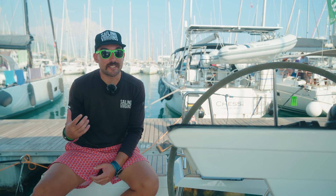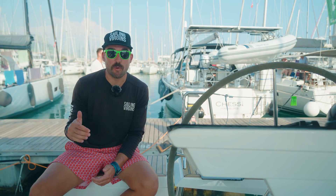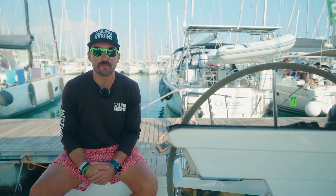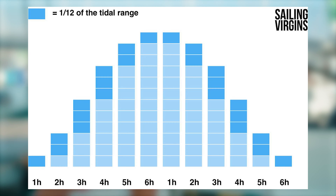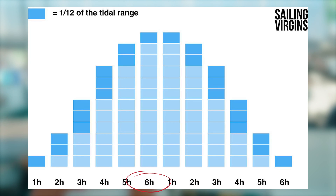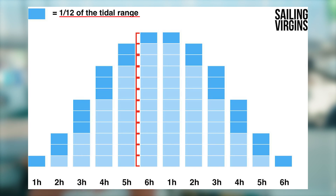The rule of twelfths. In a semi-diurnal area we can do a quick and dirty calculation to estimate the height of tide at any point in time. Because the height of water follows a curve, what we can do is take our total tidal range and divide it into twelfths. In the first hour the water is going to rise one-twelfth. In the second hour, two-twelfths. The third hour, three-twelfths. Then it will start to slow down again — the fourth hour, three-twelfths; the fifth hour, two-twelfths; and the sixth hour, one-twelfth. That's the whole tidal range broken up into twelfth blocks, as you can see in this diagram.